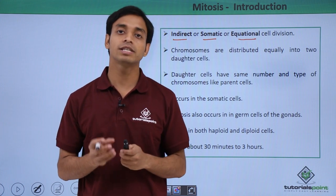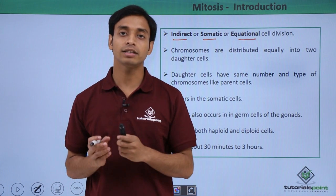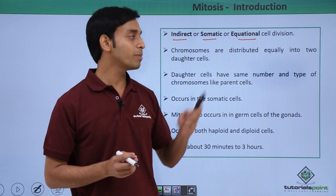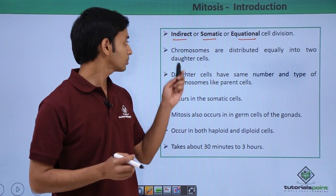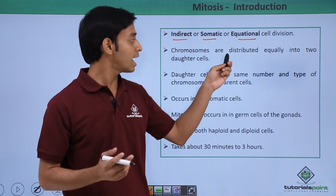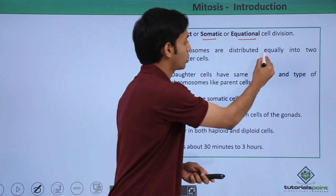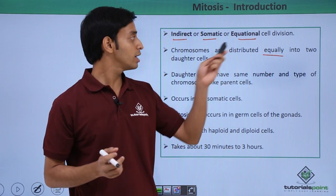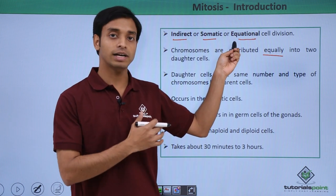That is, cells other than the reproductive cells of our body. So they are known as the somatic type of cell division. The chromosomes here, after the process of mitosis, are equally distributed into the two daughter cells. So very important point: they are equally distributed, hence we have also called it the equational type of division.